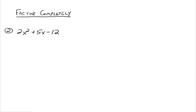2x squared plus 5x minus 12. There's no greatest common factor. Since the leading coefficient is something other than 1, we look at our two binomials. The first terms must multiply up to 2x squared — the only option is 2x and x. Then for 12, we have several options: 1 and 12, 2 and 6, or 3 and 4.